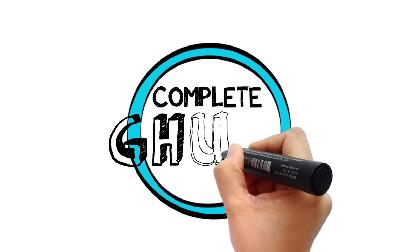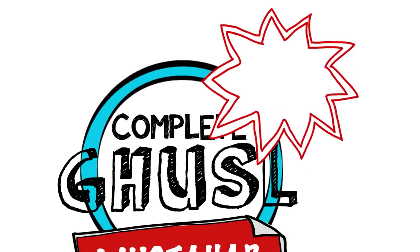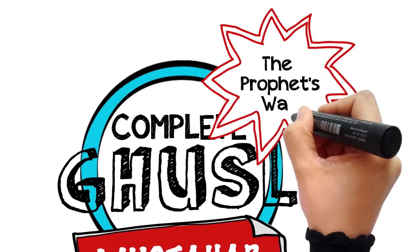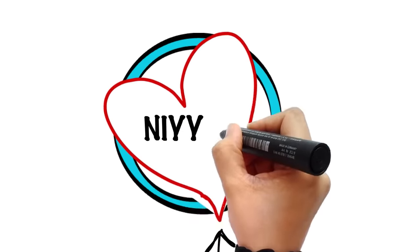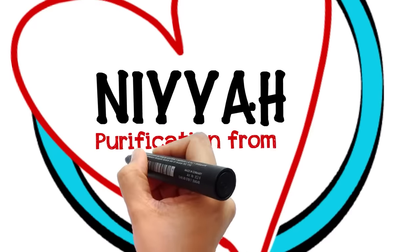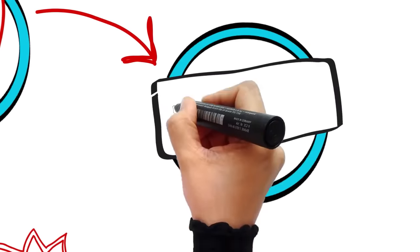As for the complete Gosil, this is the Mustahab one, and it is how the Prophet took a bath. And this is how you do it. Begin with an intention to purify yourself from the major impurity. Then say Bismillah.